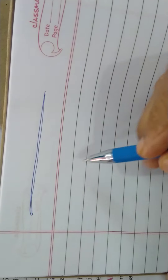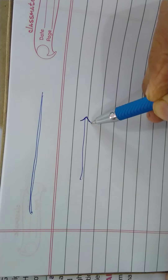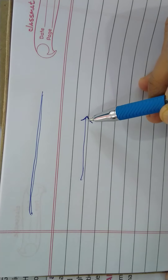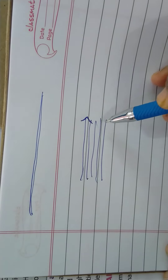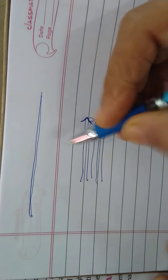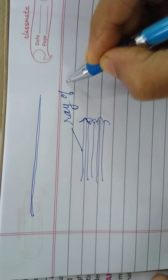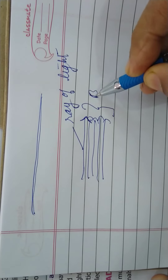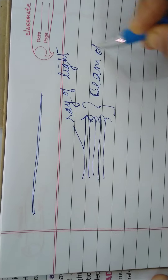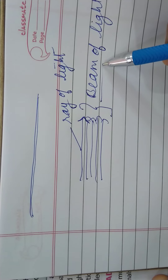This is called the ray of light, and this arrow shows the direction in which the light is traveling. Many rays together form the beam of light. A single path of light is called a ray of light, and many rays together are called the beam of light — ek saath light ki jo kirne hoti hai, usse hum beam kehte hai.